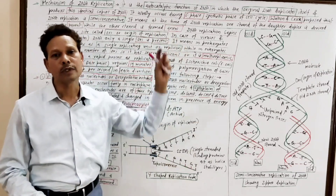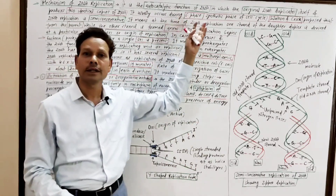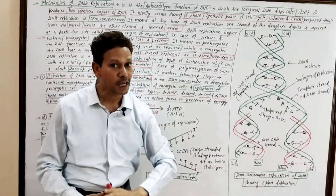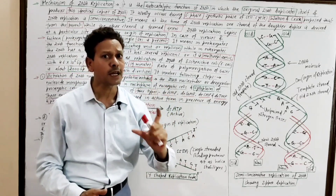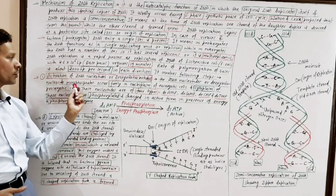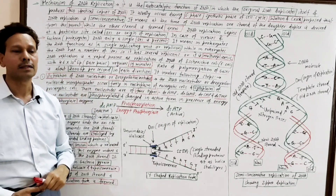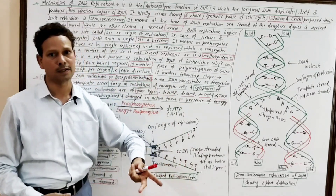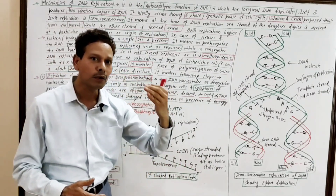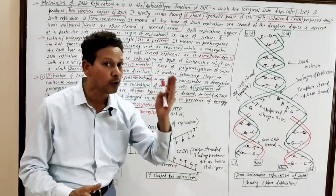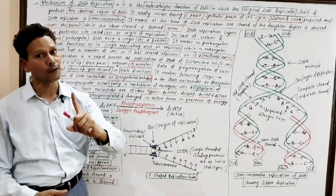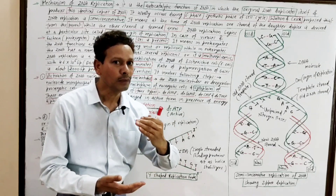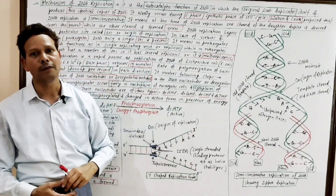This entire mechanism of DNA replication involves the following steps. The first step is activation of DNA nucleotides — these are deoxyribonucleotide monophosphates.